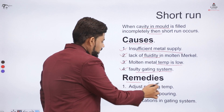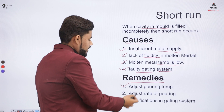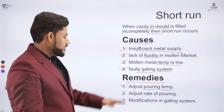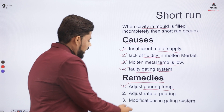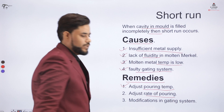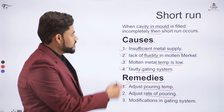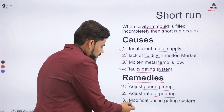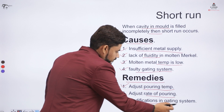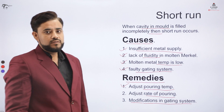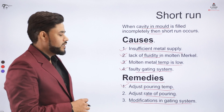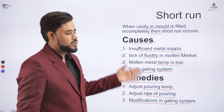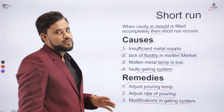Remedies for short run: first, adjust the pouring temperature and the rate of pouring; otherwise it leads to a faulty casting. Third, modify your gating system. Gating system modification is required in order to overcome and avoid the short run defect.